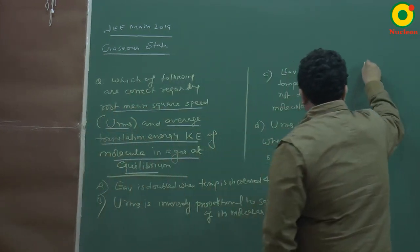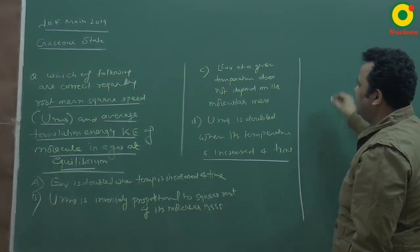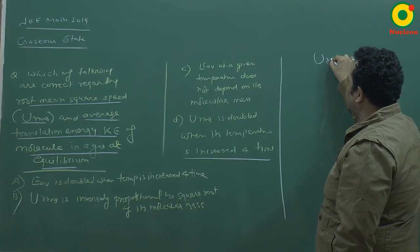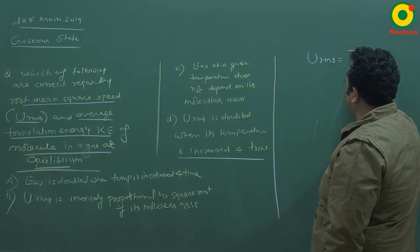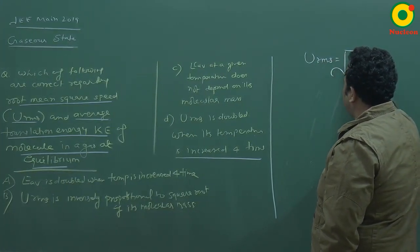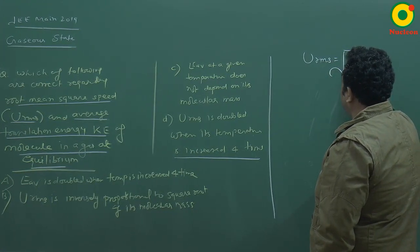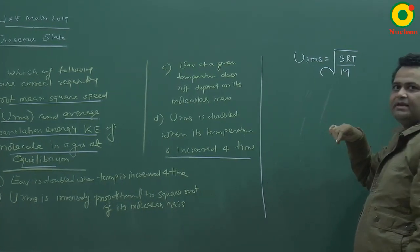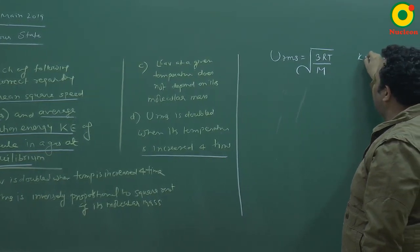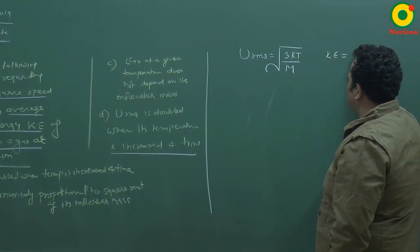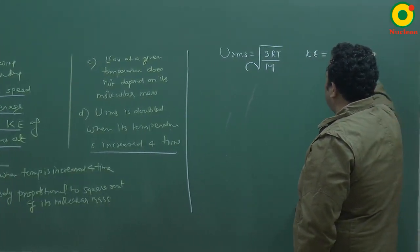Let's start with the solution. URMS root mean square velocity has the formula of the derivative of 3RT over M, R gas constant, T temperature, and M molar mass. And kinetic energy translation is 3 by 2 nRT.